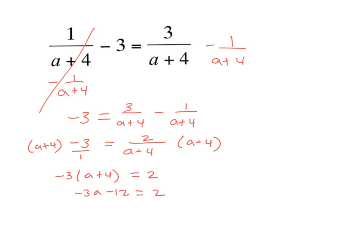We'll simplify and get two over a plus four, then multiply both sides by a plus four. Some of you might consider this cross-multiplying since the negative three is really over one. So we get negative three times a plus four equals two. We simplify and get negative 14 thirds. I need to check for extraneous solutions — if plugging this back in creates a zero denominator, the solution doesn't work. Negative 14 thirds won't create a zero denominator, so it is not extraneous, and that is our answer.